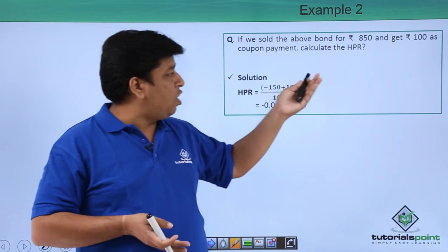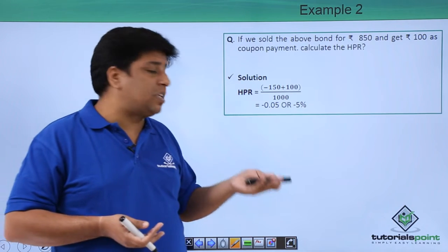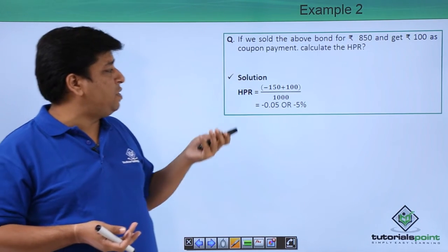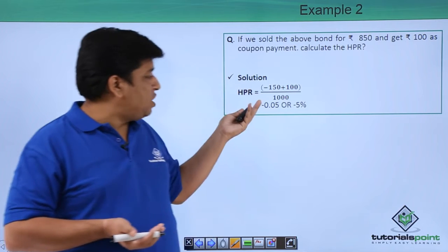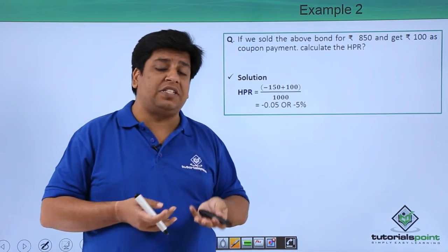But you have gained ₹100 as a coupon. So minus ₹150 plus ₹100, you have an overall loss of ₹50, that is negative ₹50. Your investment was ₹1000.